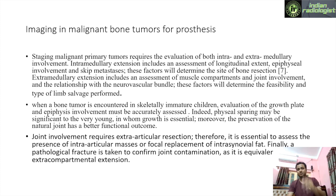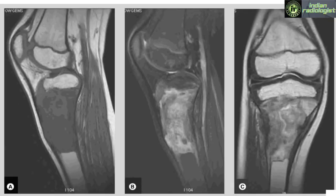A pathological fracture is taken to confirm joint contamination as it is equivalent to extra-compartmental extension. As a startup example, this is an Ewing's sarcoma in a 10-year-old boy where the STIR sequence shows the medullary extent of the lesion. In the coronal image, owing to the contrast between the growth plate and the tumor, we can see epiphyseal involvement, which should always be accurately assessed since it influences surgical strategy.